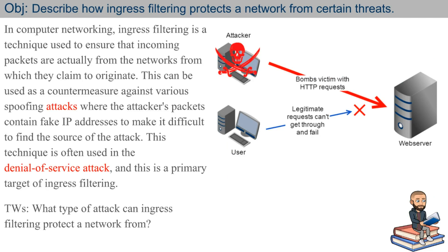In computer networking, ingress filtering is the technique used to ensure that incoming packets are actually from the networks from which they claim to originate. This can be used as a countermeasure against various spoofing attacks where the attacker's packets contain fake IP addresses to make it difficult to find the source of the attack. This technique is often used in denial-of-service attacks, and thus this is the primary target of ingress filtering.